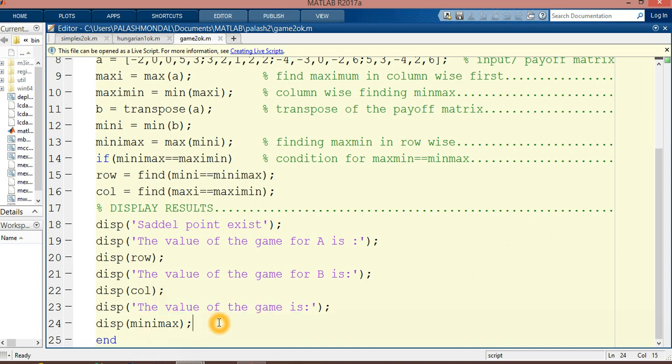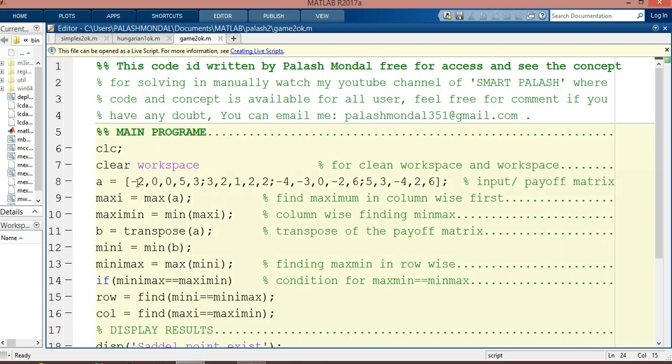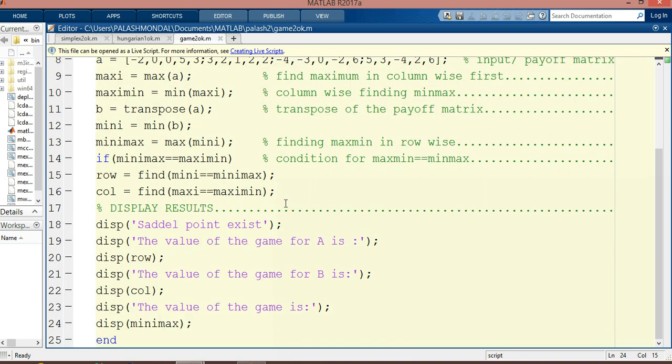If the max-min and min-max value is not equal, then the value of the game may be others. But it is the very simple condition where max-min is equal to min-max should be equals. In this way of matrix, max-min is equal to min-max and the value of the game is same.